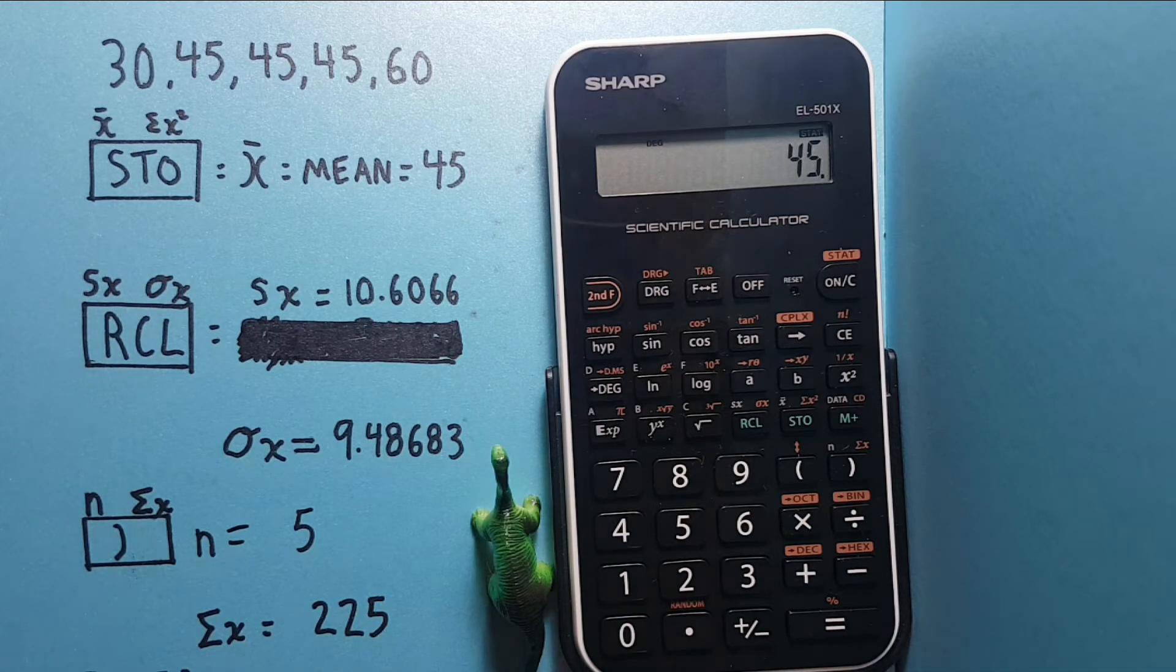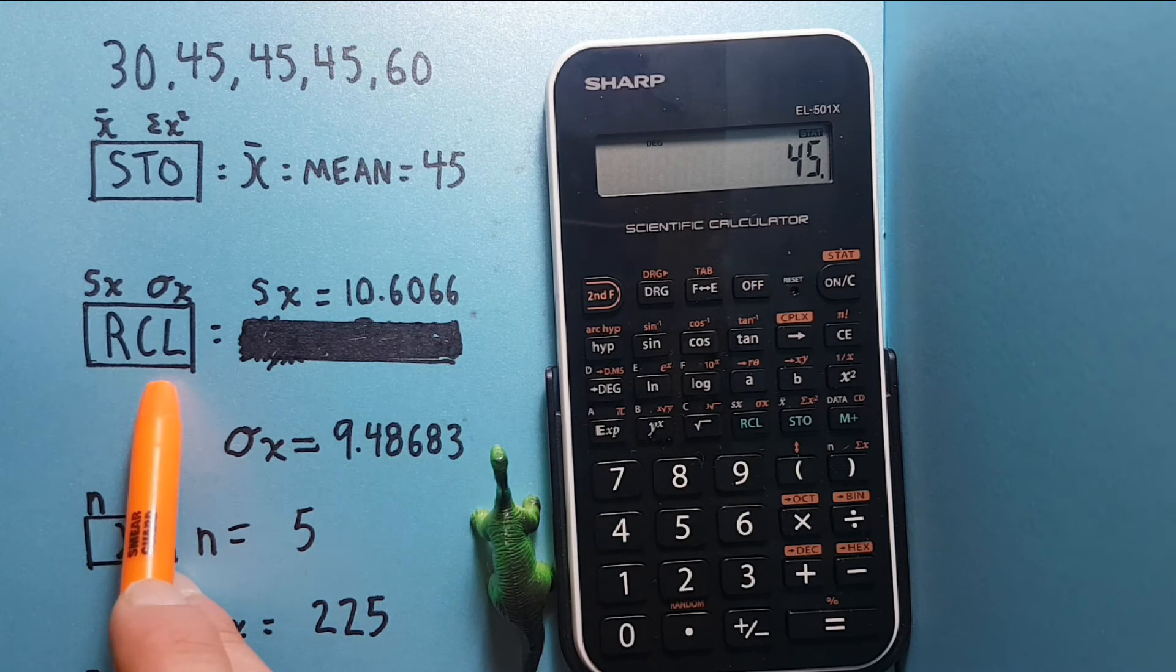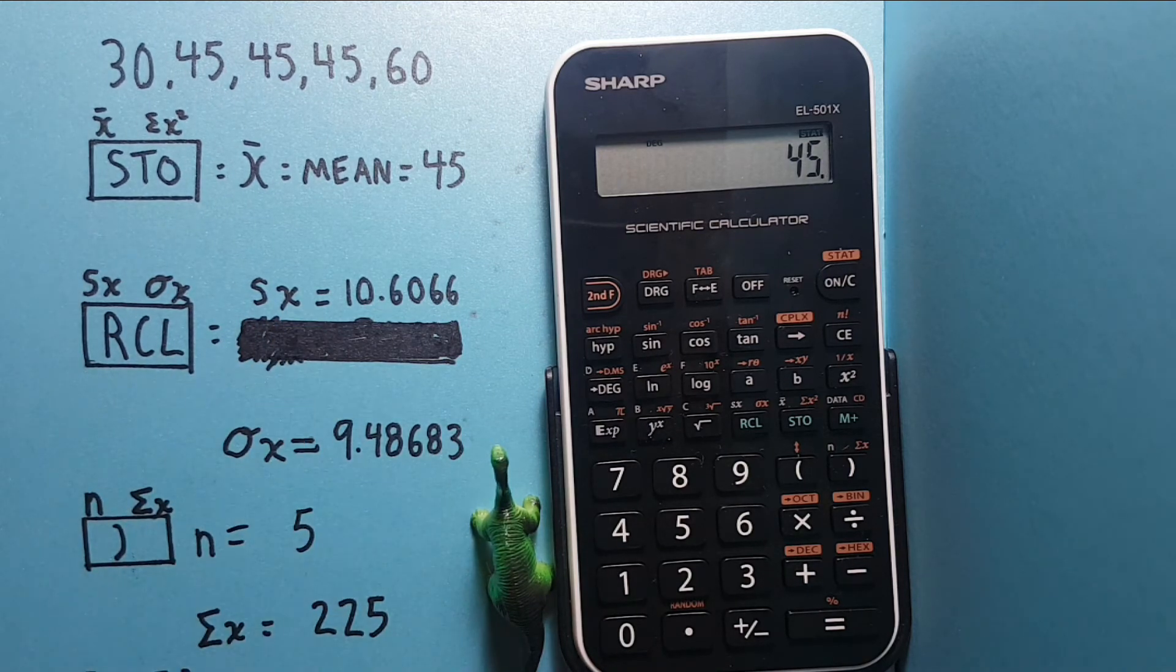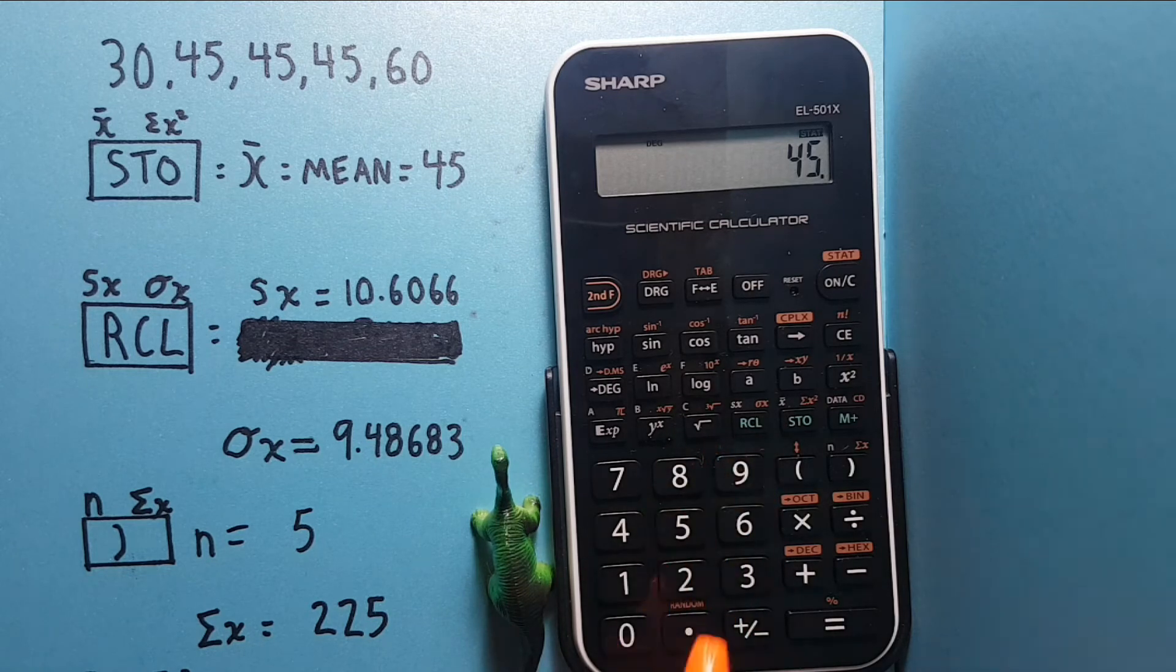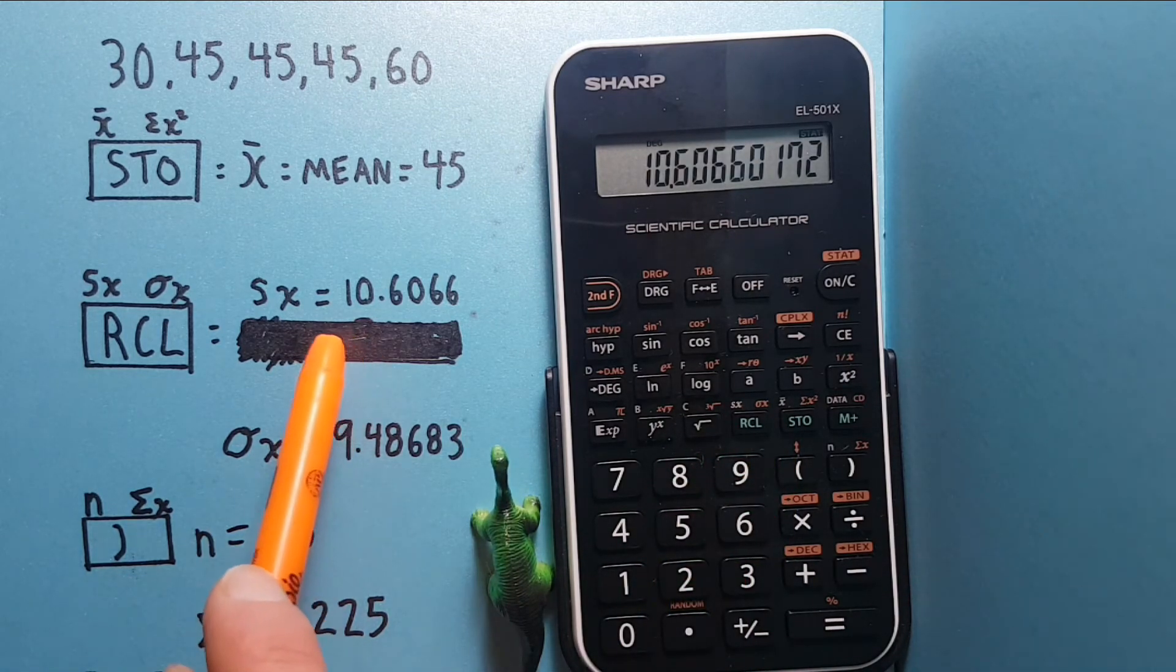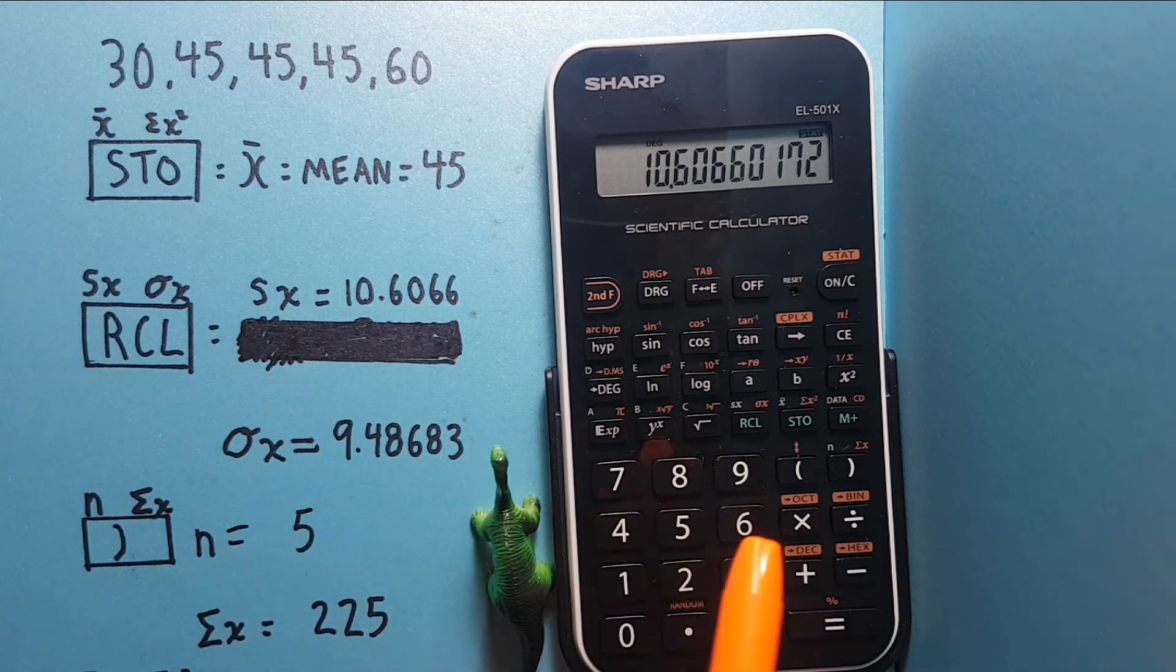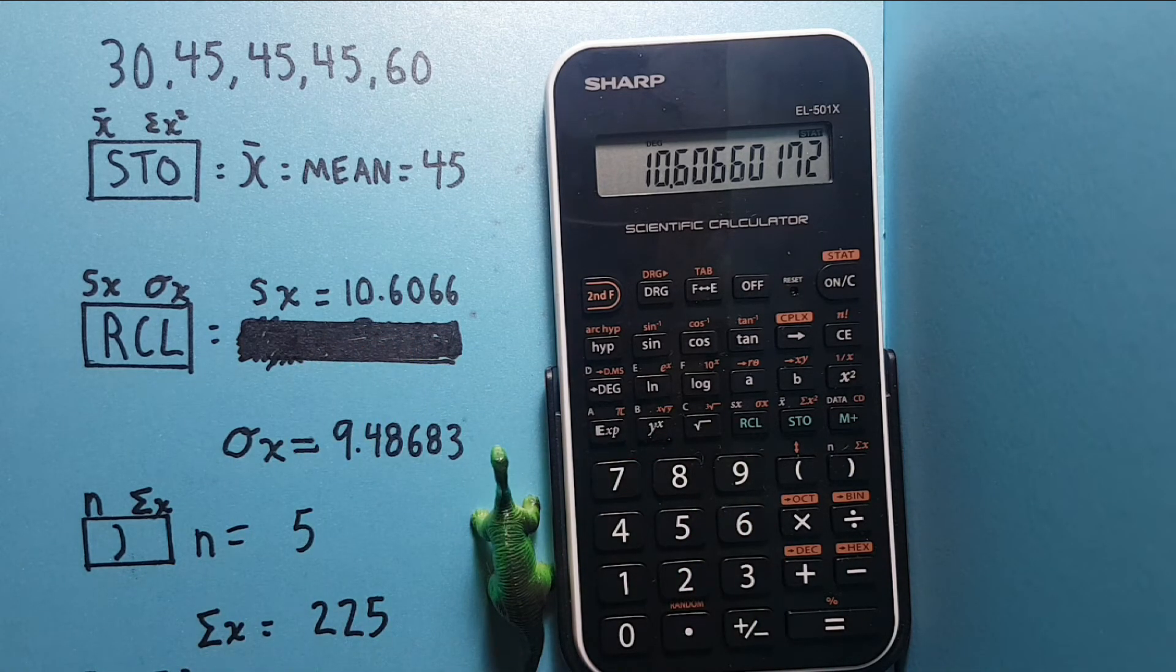And now if we want to find the sample standard deviation, we would use this key here, the Sx, which is located right here, over top of the RCL key. So we press this, and we get 10.6066, etc., which is our sample standard deviation.